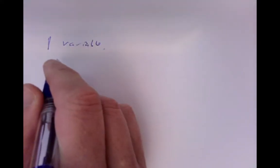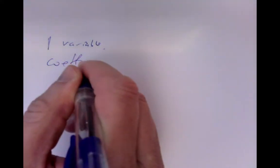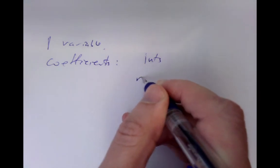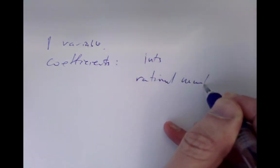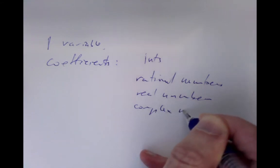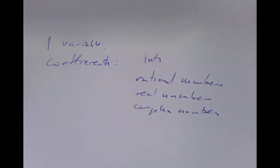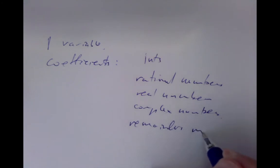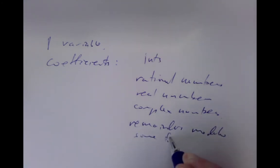This is the fifth in a series of lectures for MS 2014 and MS 3014 at University College of Cork in Algebra. In this lecture, we'll start thinking about polynomials. We'll be looking at polynomials in one variable only for quite a while. We could allow our coefficients to be drawn from the integers, the rational numbers, the real numbers, the complex numbers, or we could also allow them to be remainders modulo some fixed positive integer.